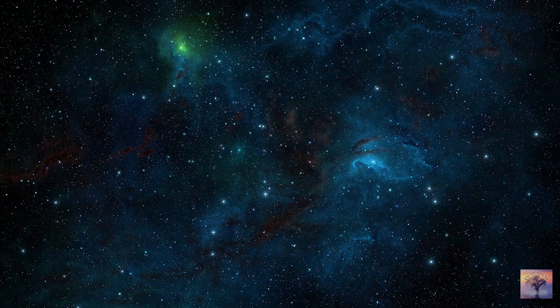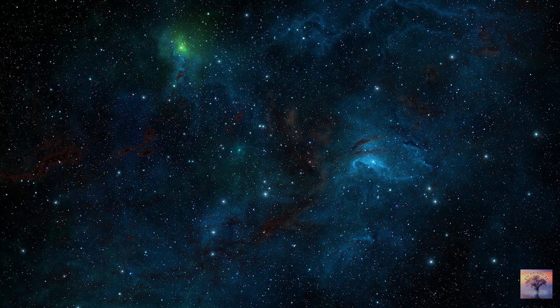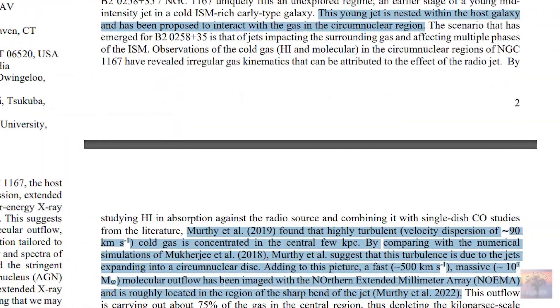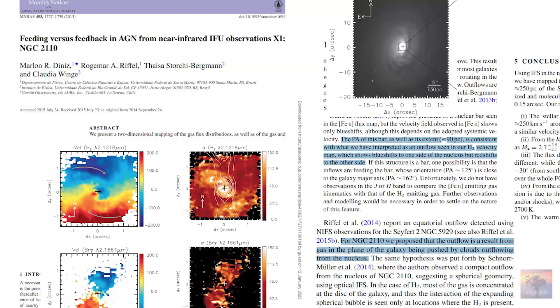But this idea also solves many other problems in astrophysics. For example, the mystery of the formation of O and B-class stars, the cause of most supernova explosions and spiral arms, the G-dwarf paradox, and others. And this idea with jets in a disk has a lot of evidence, and even direct observation of these jets inside the disk.